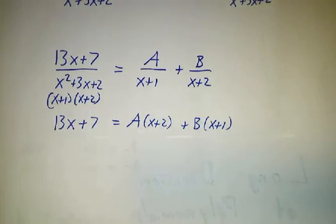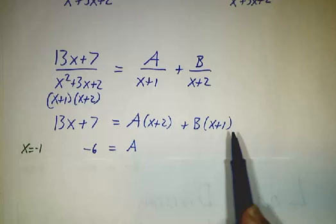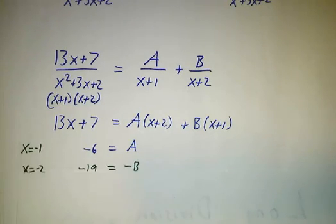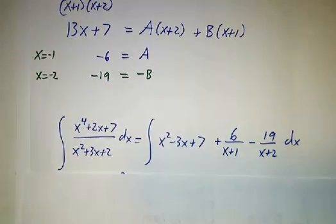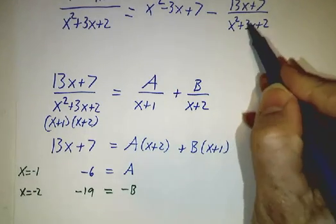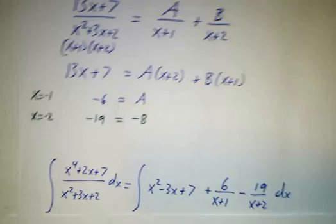We plug in x equals negative 1 and x equals negative 2. When we plug in x equals negative 2, we get that negative 6 is A. When we plug in x equals negative 2, we get that negative 19 is minus B, so B is 19. So this whole expression, since we're subtracting it, becomes plus 6 over x plus 1 and minus 19 over x plus 2.